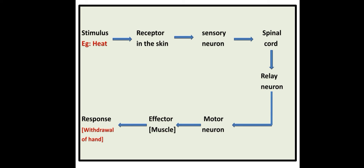Here is a simple flow chart that shows the path of electrical signals during a reflex action. The stimulus is heat that is sensed or detected by the receptors in the skin. Thermoreceptors in the skin generate electrical impulses which are sent to the sensory neurons. These sensory neurons take the signals to the spinal cord. From the spinal cord, the messages are sent through relay neurons to the motor neurons. From the motor neurons, the electrical signals are transported to the effector.